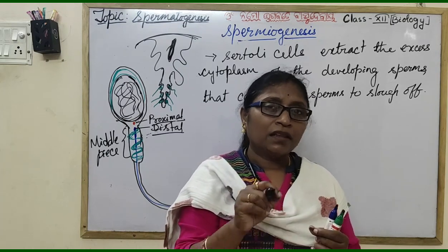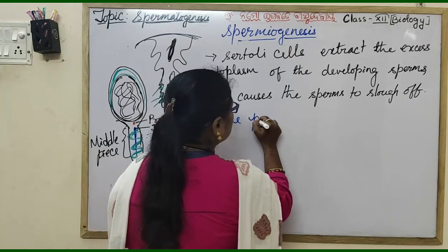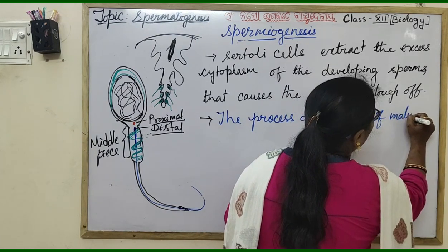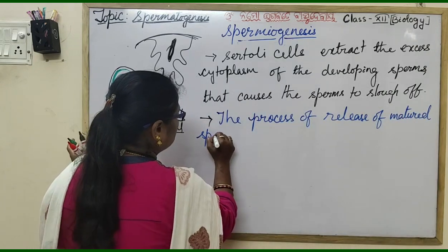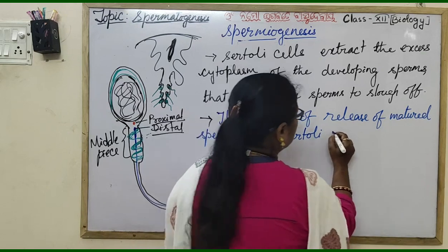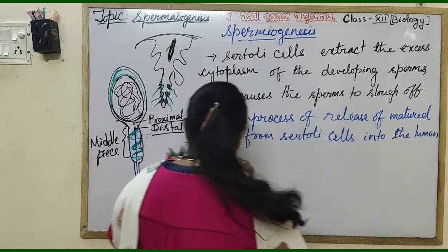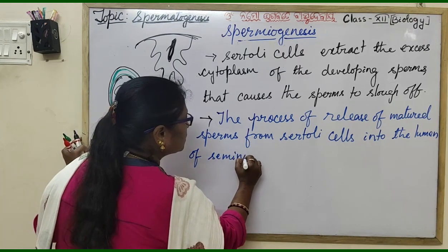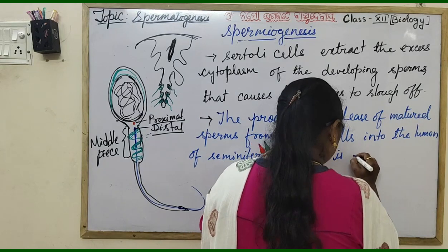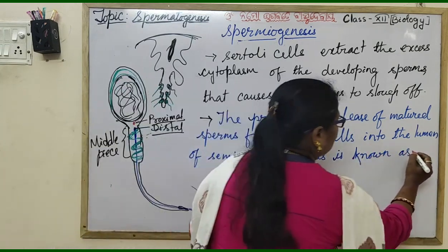This process of release of matured sperms from Sertoli cells into the lumen of the seminiferous tubules is called spermiation.